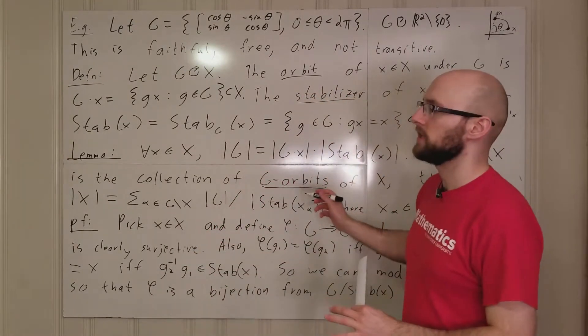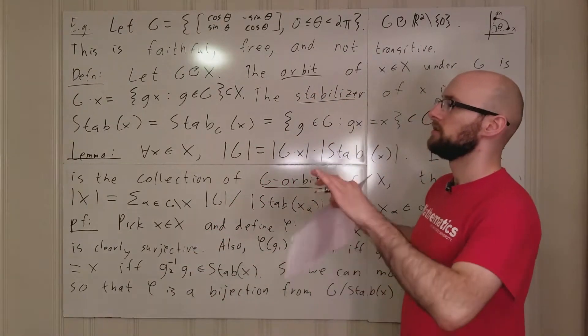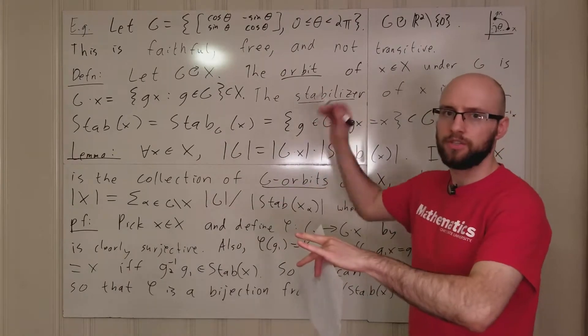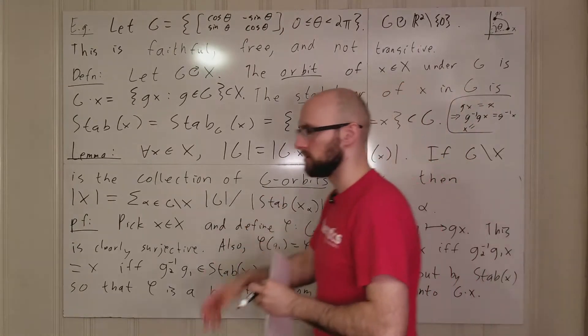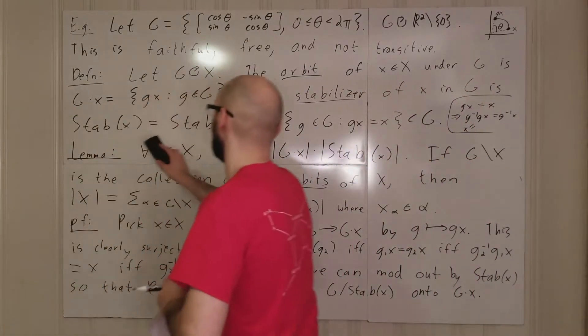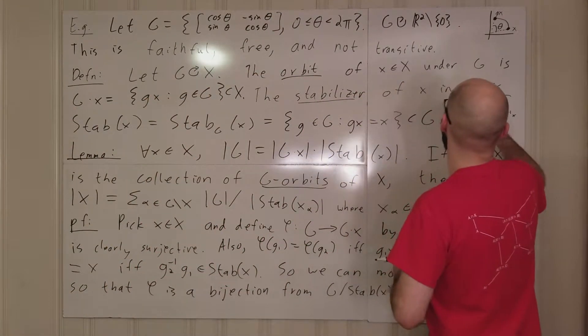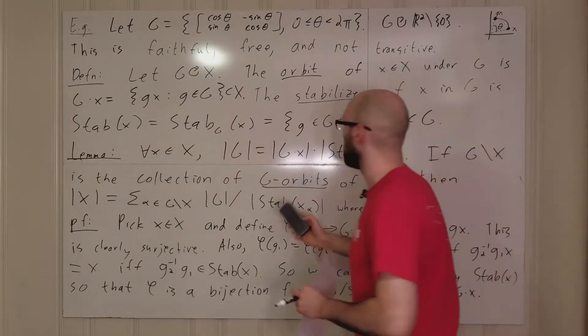And then obviously, if g1 and g2 fix x, then if you consider g1, g2, x, then the one will fix it and then the other will fix it still. And so you can see that the stabilizer of an element is a subgroup of whatever the group is. So we can definitely mod out.